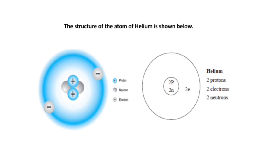You can see the structure of helium. In the central region we have the positive particles, which are the protons. We also have neutrons, which have no charge. And then in the region surrounding the nucleus — the energy level — we have electrons, which are negatively charged particles. So within the nucleus you have two protons and two neutrons, and in the energy level you have two electrons.